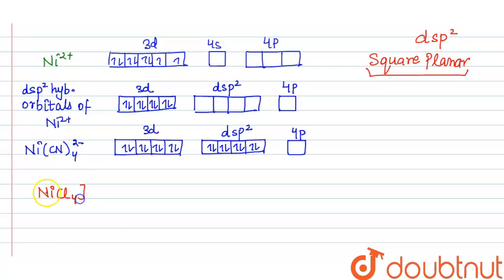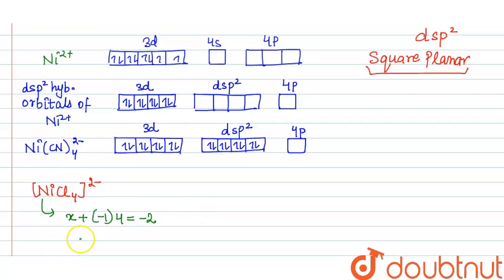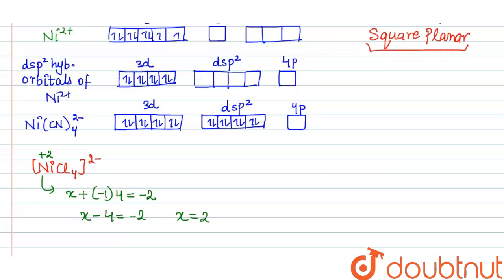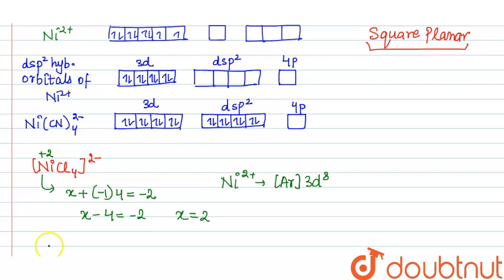For NiCl4²⁻, the oxidation state: x plus (−1) charge on chloride times 4 equals −2, so x − 4 = −2, giving x = +2. The oxidation state of nickel is again +2, and for Ni²⁺ the electronic configuration is [Ar] 3d⁸.